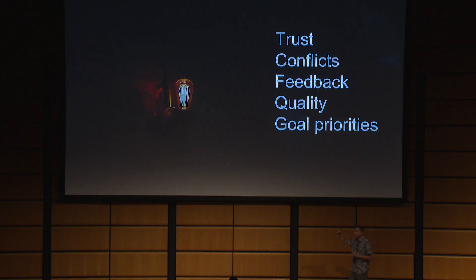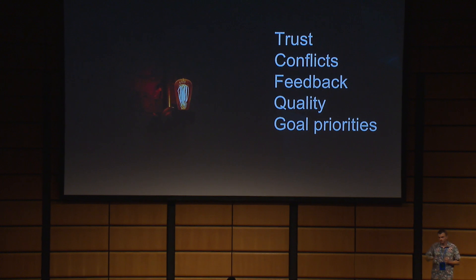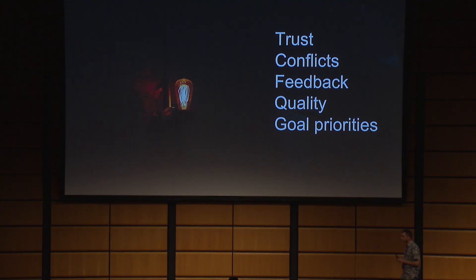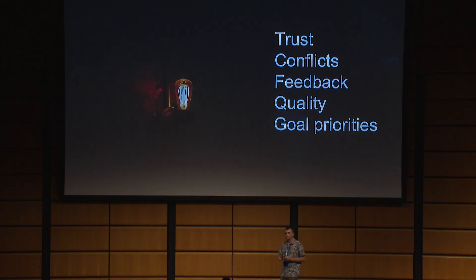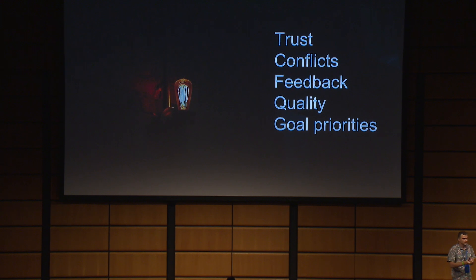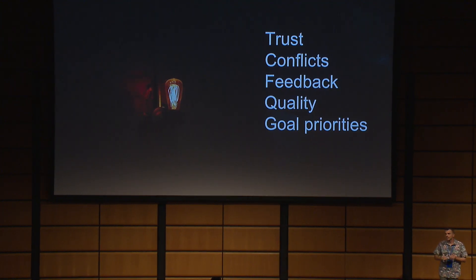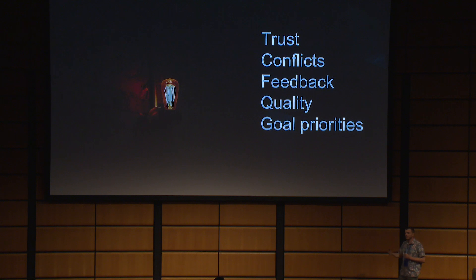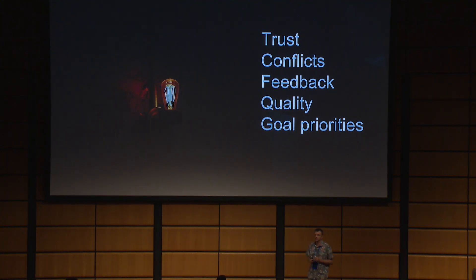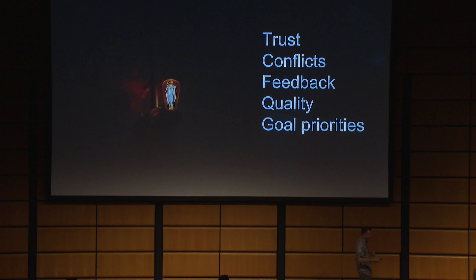Feedback is the continuation of this, because a cohesive team easily shares feedback — both giving and receiving. What is more important is that it includes both positive and negative feedback. Negative feedback is more important because it's something we give to help a person become better. And because of trust in a cohesive team, no one actually takes this personally — they react and respond.